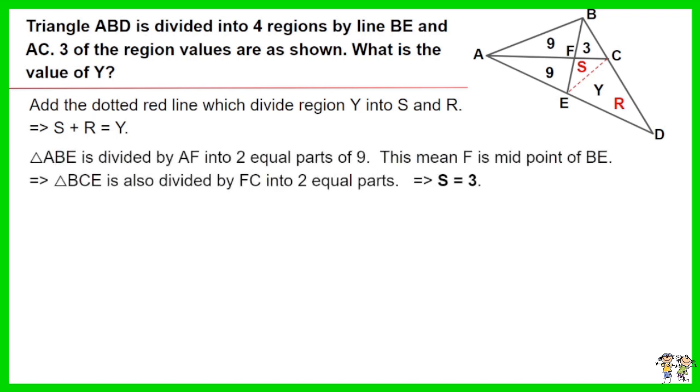Triangle ABE is divided by AF into 2 equal parts of 9. This means F is the midpoint of BE. As such, triangle BCE is also divided by FC into 2 equal parts. Thus S equals 3.